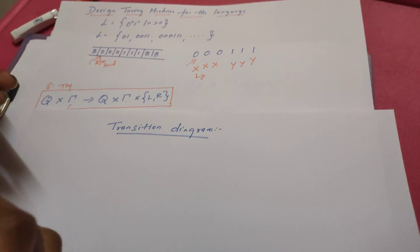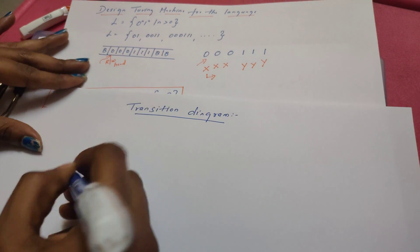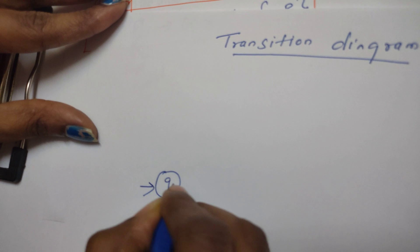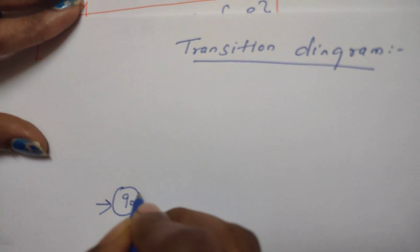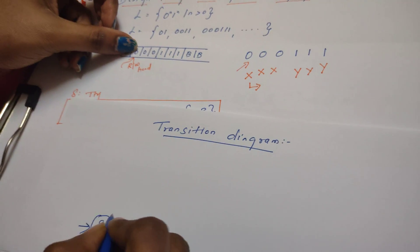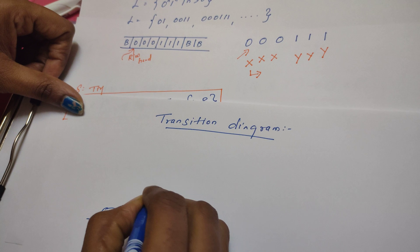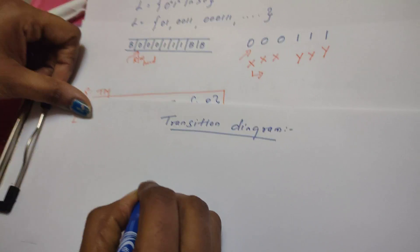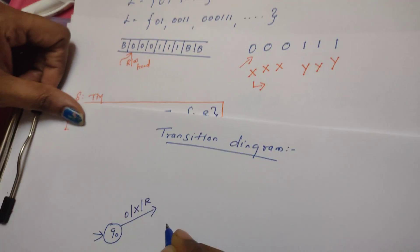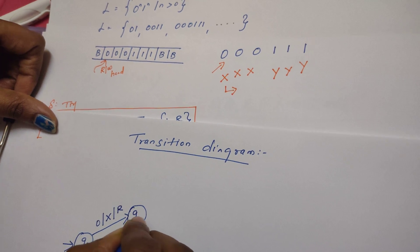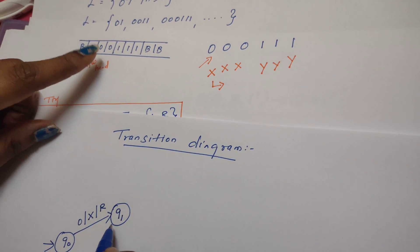Keeping this logic in mind, let us draw the transition diagram. The Turing machine always starts in the initial state q0. From q0, the first symbol it expects to read is zero. When it reads that zero, it is replaced by x, the read/write head moves right, and the state changes to q1.